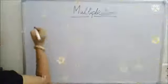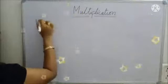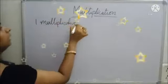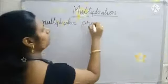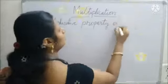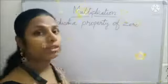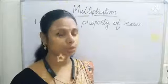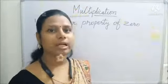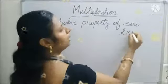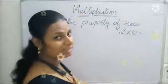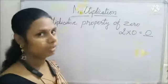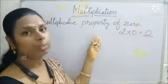The first property is the multiplicative property of zero. This means any number, if you multiply by zero, you get the answer zero. For example, two multiplied by zero — two zeros are zero. Whenever you multiply any number by zero, you get the product zero. This is the multiplicative property of zero.